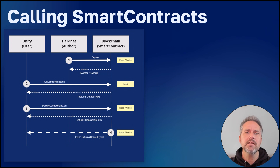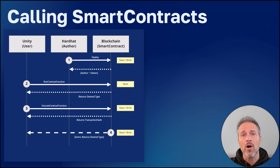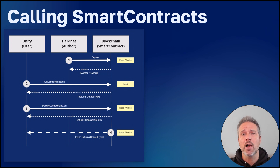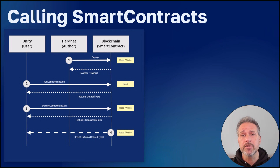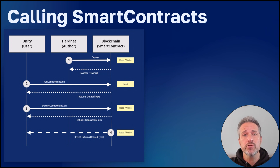From a high level, let's imagine we have Unity running with a user, we have Hardhat where we're going to deploy the contract, and we have the smart contract itself. I'll step through these four. First, we deploy the contract from Hardhat to the blockchain.